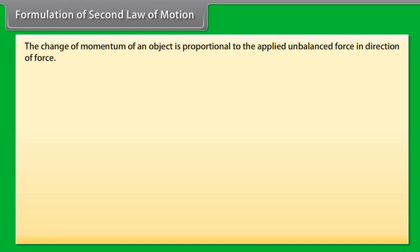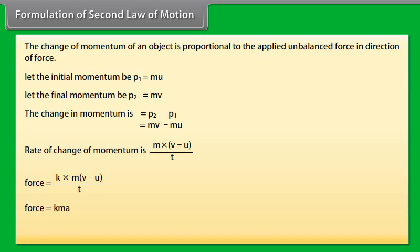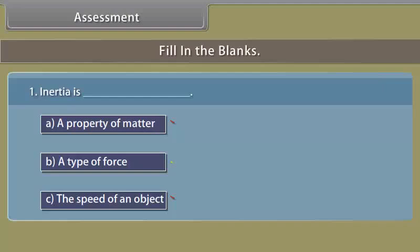Formulation of second law of motion: The change of momentum of an object is proportional to the applied unbalanced force in direction of force. Let the initial momentum be P1 which equals MU. Let the final momentum be P2 which equals MV. The change in momentum is P2 minus P1 which equals MV minus MU. Rate of change of momentum is M into V minus U whole upon T. Force equals KMA, where K is the proportionality constant.